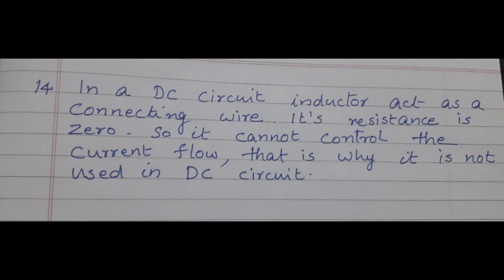Answer: In a DC circuit, inductors act as a connecting wire. Its resistance is zero, so it cannot control the current flow. That is why it is not used in DC circuits.